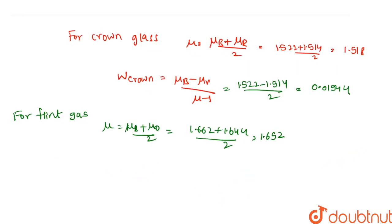Similarly, ω flint. ω flint is equal to 1.662 minus 1.644 divided by 1.653 minus 1, which is equal to 0.0276.